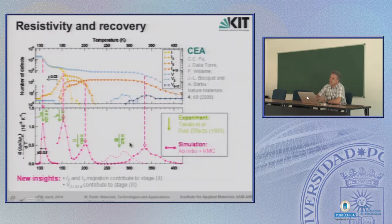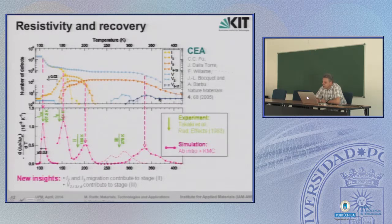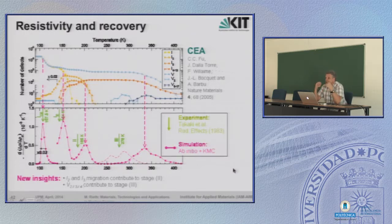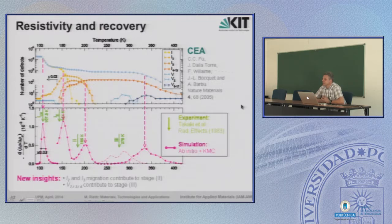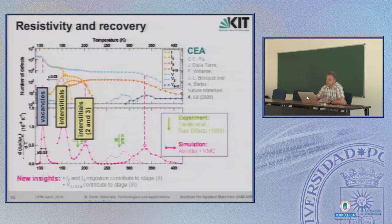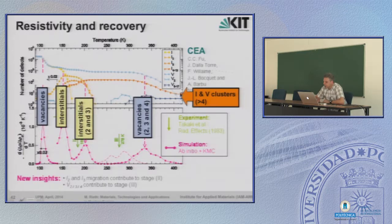In general, if we heat this type of lattice to above 400 K, the only surviving defects are interstitial clusters and vacancy clusters with more than four of their species. Small clusters and single point defects vanish early, in several stages. At higher temperature, only the bigger clusters survive. This is recovery.